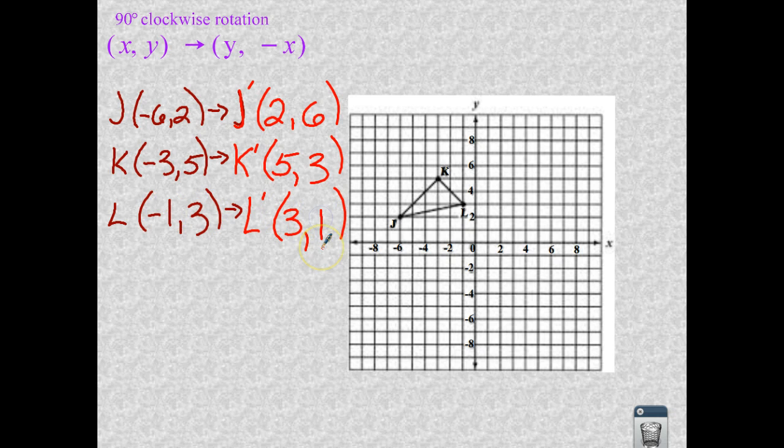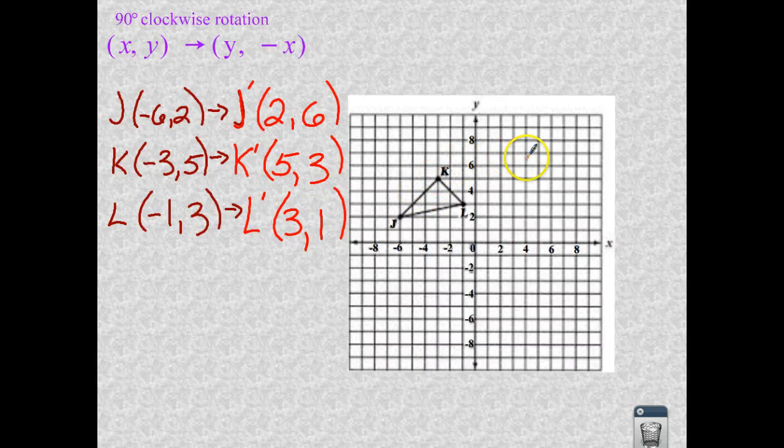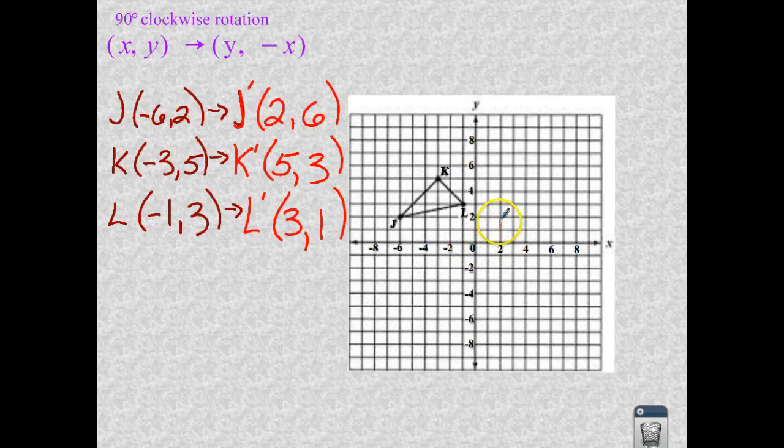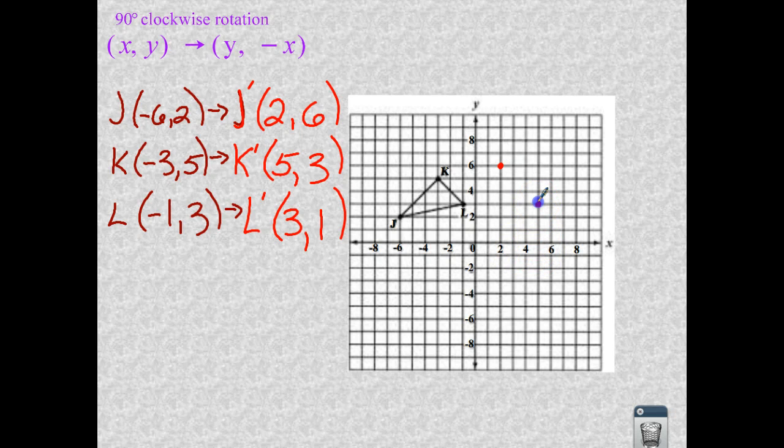So if I were to go and graph this 90 degree clockwise rotation, it's going to land on these three ordered pairs. So we'll go to 2, 6, 5, 3, and 3, 1. And let's name them as J prime, K prime, and L prime. And again, I always emphasize using a straight edge or a ruler. I'm going to freehand it here. And there you have a 90 degree clockwise rotation of the figure.